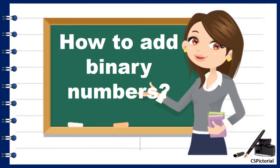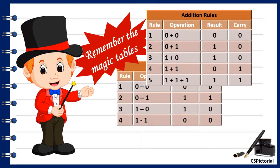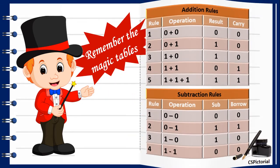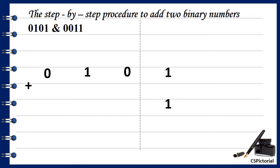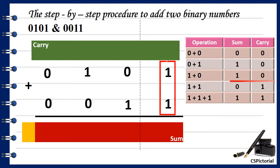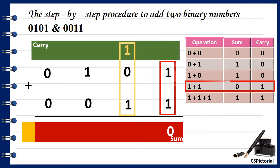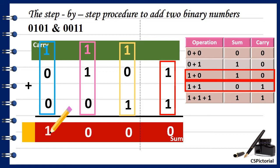The addition of binary numbers is very simple. Remember these rules for binary addition and subtraction. Let us add these two binary numbers: 0101 and 0011. The addition is done from right to left, as with normal addition. Apply the addition rules at each step: 1 plus 1 is 0 with carry 1; then 1 plus 0 plus 1 is 0 with carry 1; then 1 plus 1 plus 1 is 1 with carry 1; finally 1 plus 0 plus 0 is 1 with carry 0. So 0101 plus 0011 equals 1000.